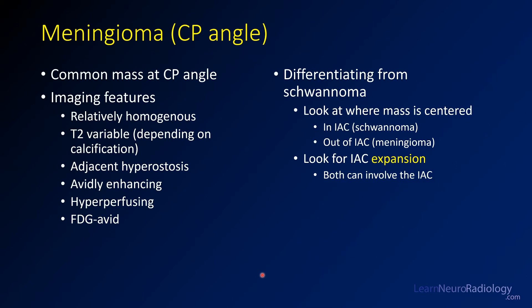This is a case of meningioma — a very common mass located in the cerebellar pontine angle. They tend to be relatively homogeneous and avidly enhancing. There can be adjacent hyperostosis, and they are T2 variable but tend to be relatively bright unless there is hemorrhage or calcification. On perfusion they'll be hyperperfusing, and similarly FDG-avid on PET, so don't rely on hypermetabolism to differentiate from metastasis.